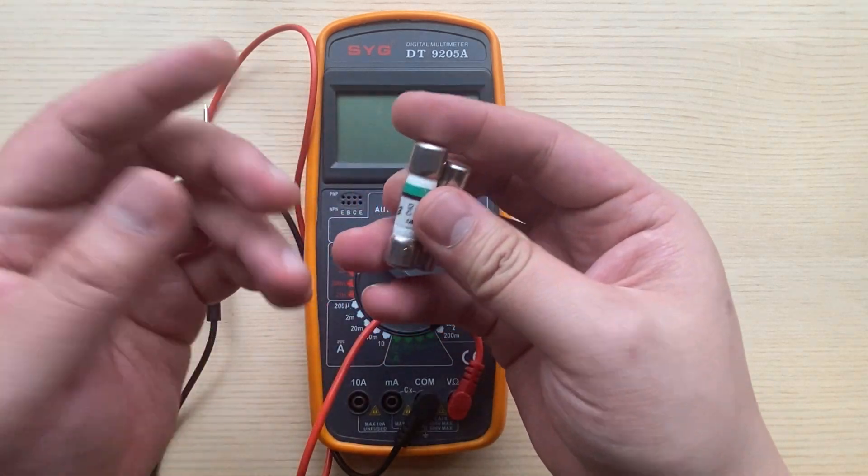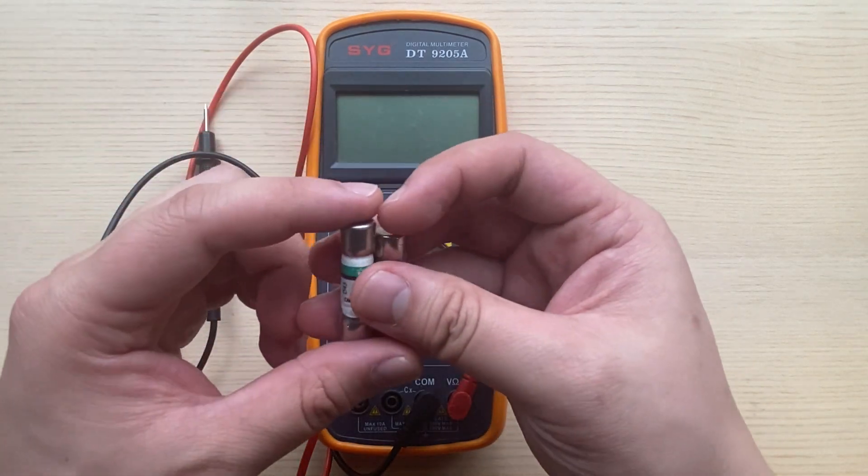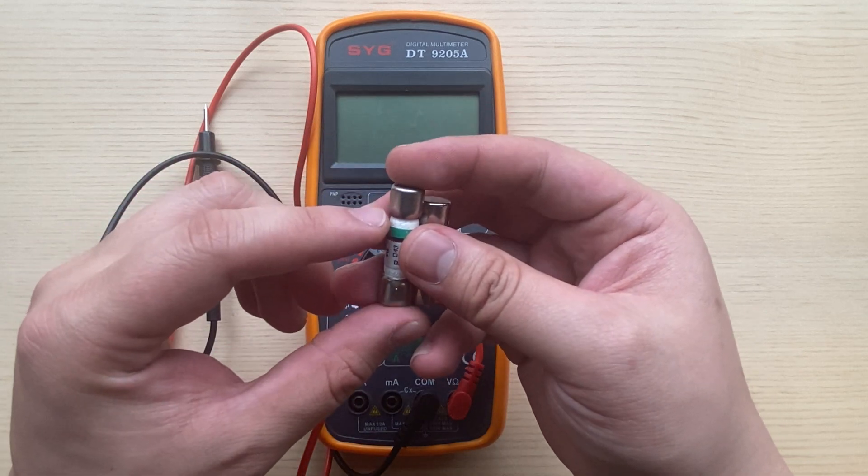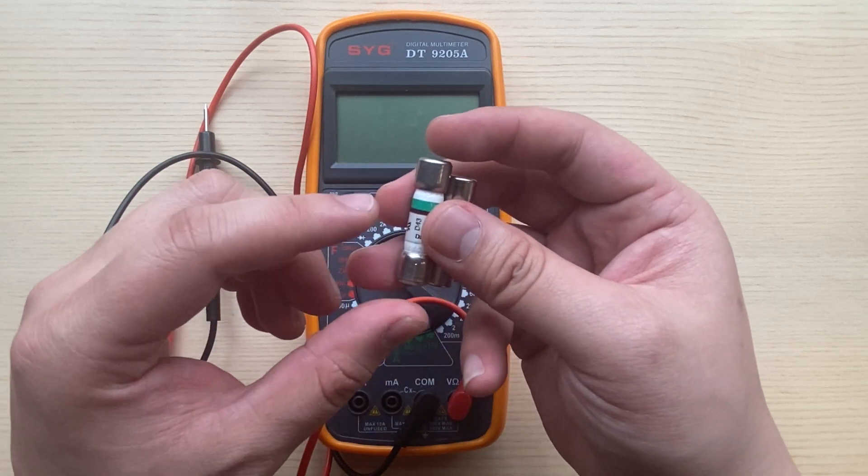And there are a few newer styles with the dash R ending, indicating that they are ROHS compliant. They are lead-free and that's the only difference.